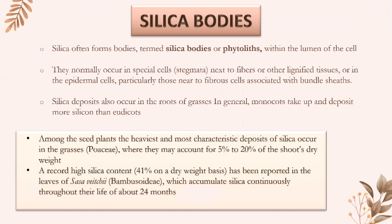Silica often forms bodies, termed silica bodies or phytoliths, within the lumen of the cell. They normally occur in special cells called stegmata, next to fibers or other lignified tissues, or in the epidermal cells, particularly those near fibrous cells associated with bundle sheaths.